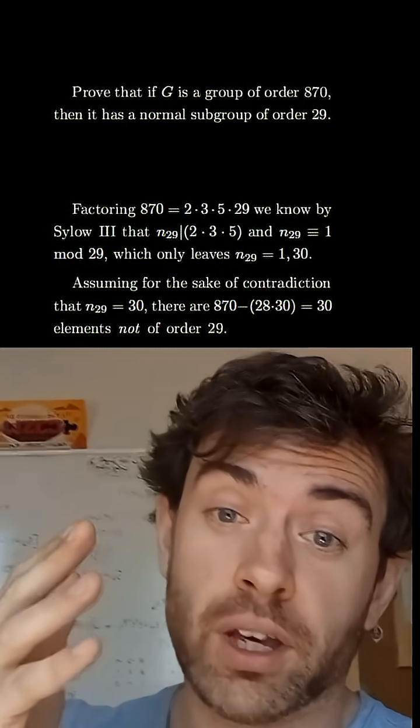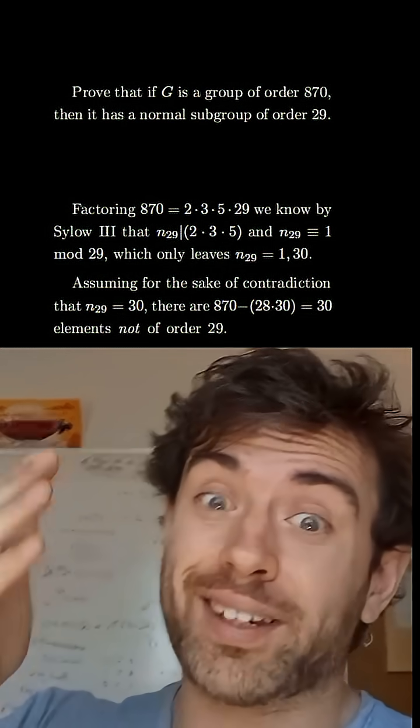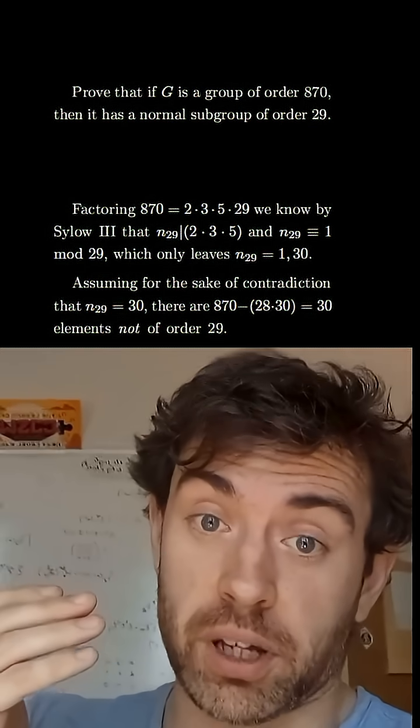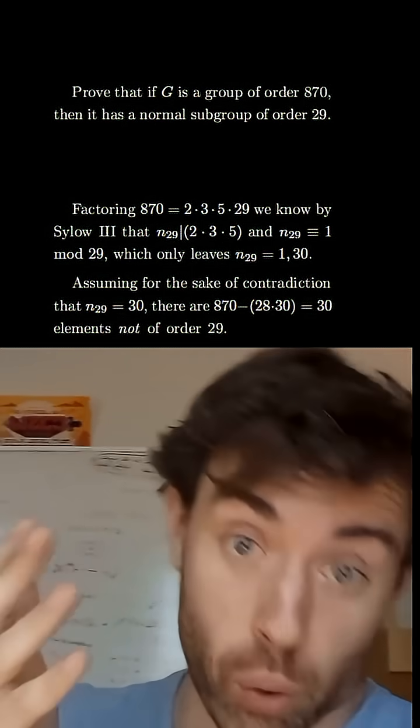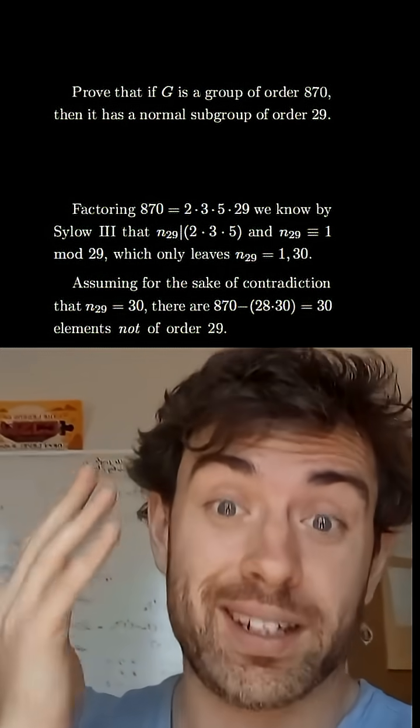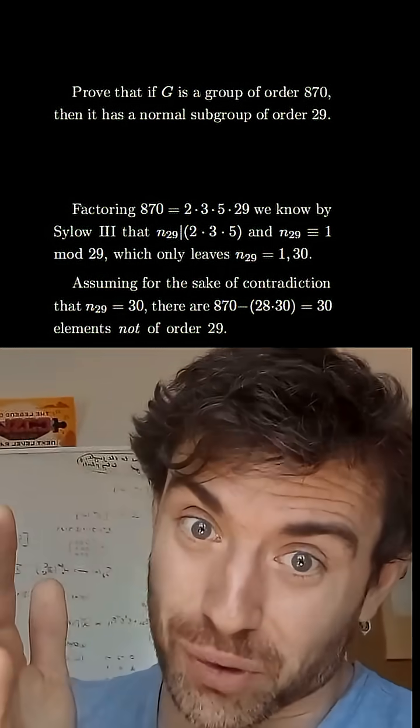So if that were the case then each of those 30 Sylow subgroups would have 28 non-identity elements, and so in total this would account for 840 elements of order 29, which means that there would be 30 elements not of order 29.